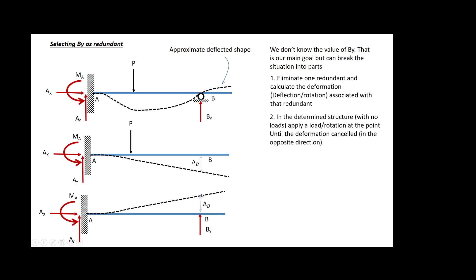After that, we take the same reduced structure and push it up with a reaction at B, which produces a deflection in the other direction. Because this deflection plus this deflection has to equal zero — that is basically how this principle works. This system is equivalent to this system plus that one.